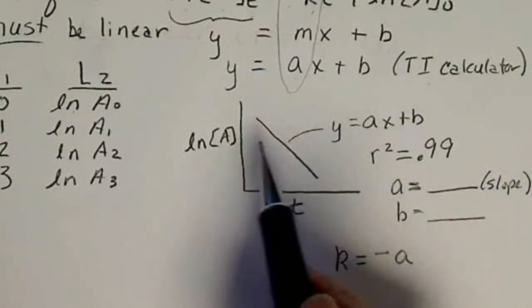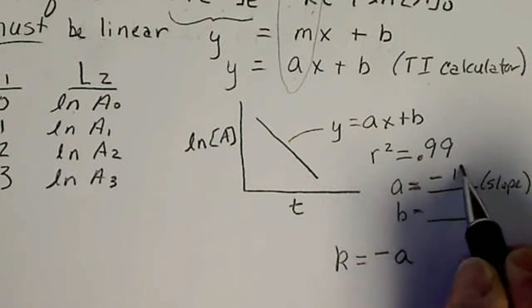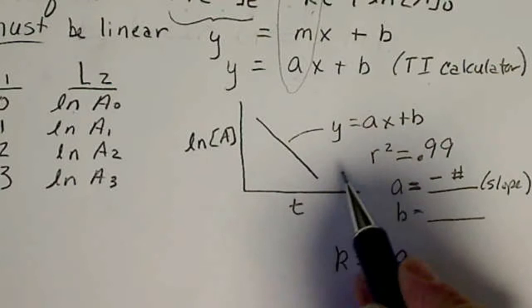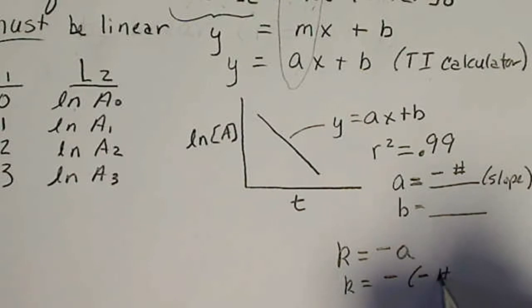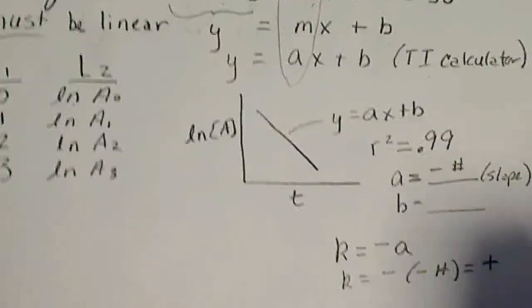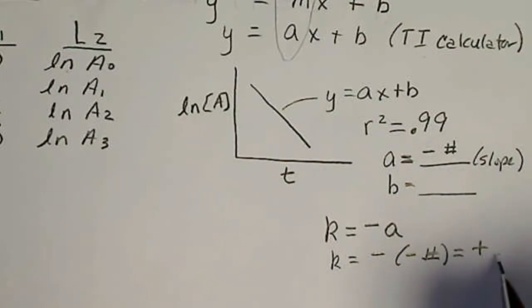And the data will always look like this. So the slope is always going to be a negative number. And because that's what a negative slope looks like, so K is always going to be the opposite of a negative value. So K will always be a positive value.